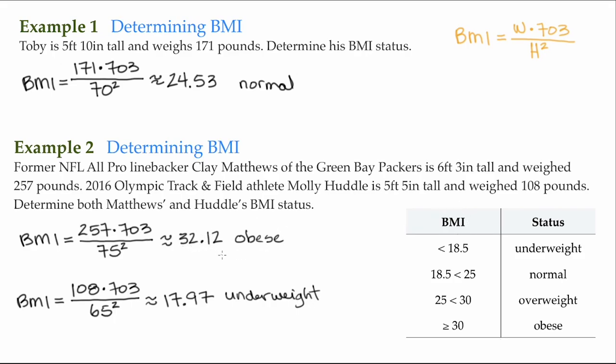It's hard to believe that according to his BMI he would be considered obese. Certainly, Molly Huddle was very fit, and it's hard to think she would be considered underweight. The drawback of BMI is it only takes into consideration two values: height and weight. But there are plenty of other factors that help determine somebody's fitness status.